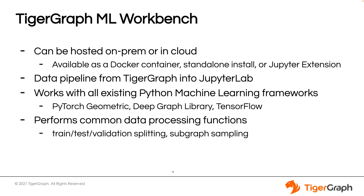Let's switch gears and talk about the TigerGraph Machine Learning Workbench itself. The Machine Learning Workbench is a framework for easy access to graph AI and machine learning models on top of TigerGraph. It can be hosted either on-prem or in the cloud — you can run it as a Docker image or install it as a standalone application on any server. It functions as a data pipeline to stream data out of your TigerGraph instance and into a JupyterLab environment for easy machine learning and Python integrations. It works with all existing Python machine learning frameworks — most notably PyTorch Geometric, Deep Graph Learning, with TensorFlow support upcoming. It also performs common data processing functions such as training, validation, and testing splits, as well as sub-graph sampling methods to more easily feed data into your machine learning model.